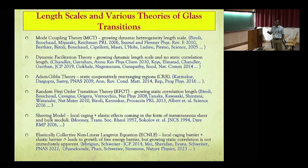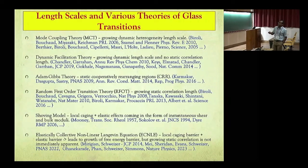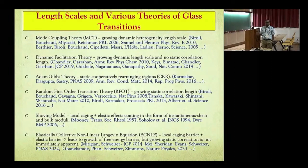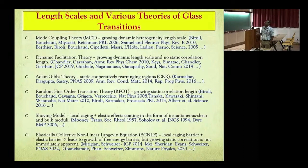An extension of Adam-Gibbs theory is the Random First Order Transition (RFOT) theory, one of the celebrated theories of glass physics, which clearly suggests that there is a static correlation length that must diverge and assumes a finite-temperature glass transition. There has been a significant amount of work done to compute those correlations.